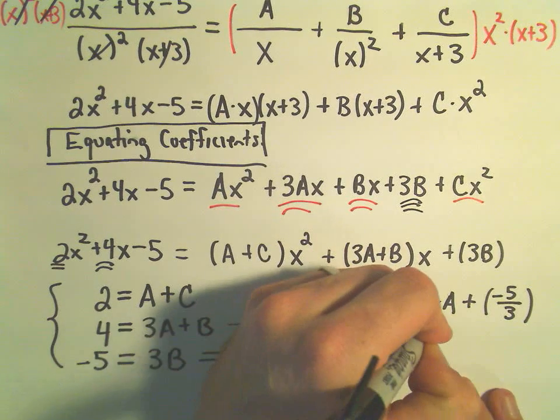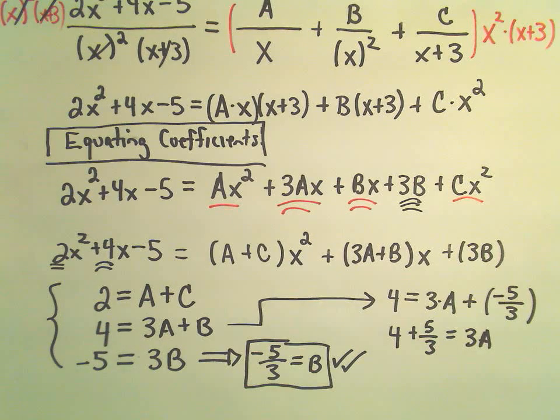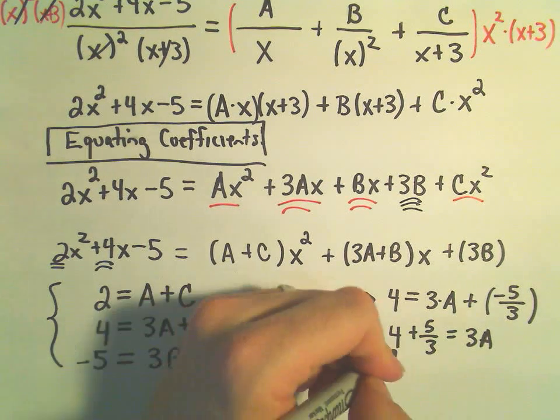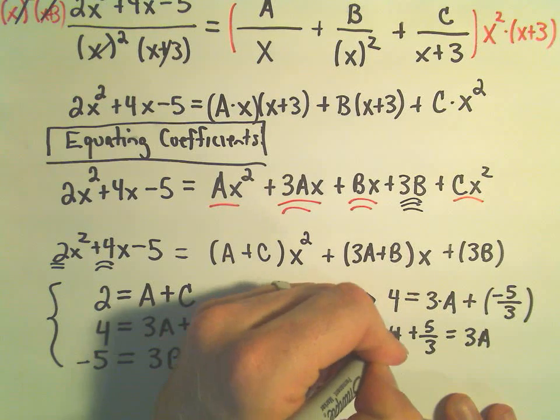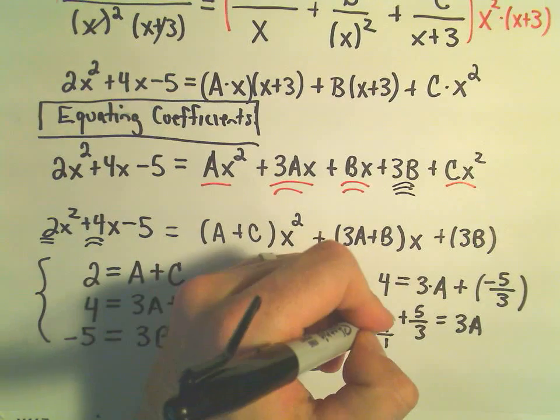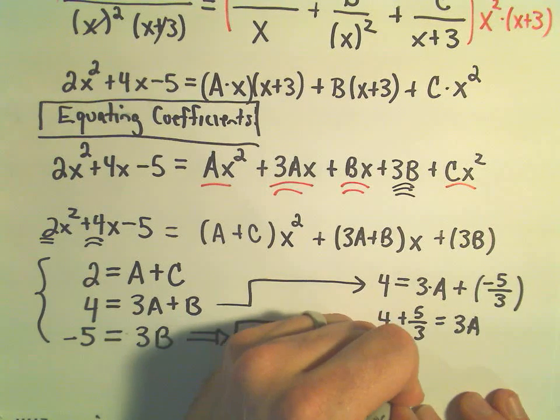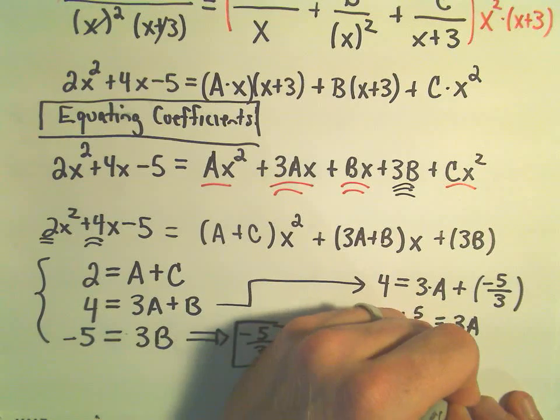So now I simply have to take this equation and solve for A. So let's see. I could take 4. I could add the 5 thirds to both sides. Let's see. I'm definitely going to run out of room here at some point. If we multiply top and bottom by 3, we would get 12 over 3 plus 5 over 3. Well, 12 over 3 plus 5 over 3, that would give us 17 over 3 equals 3A.